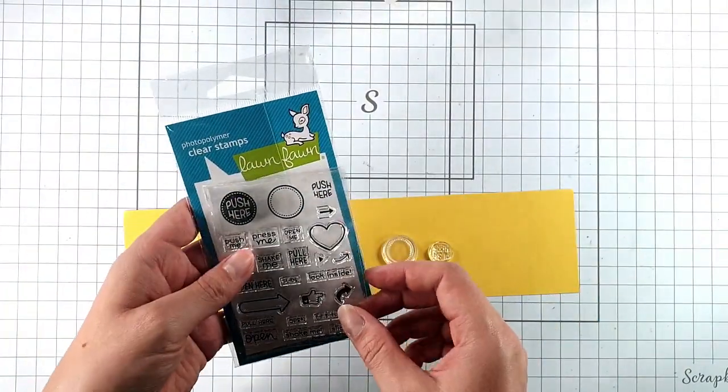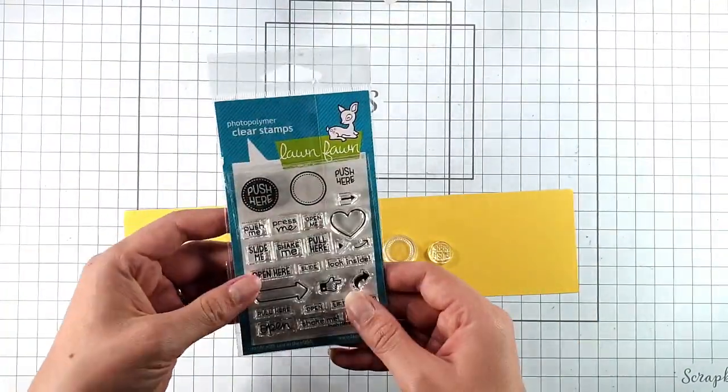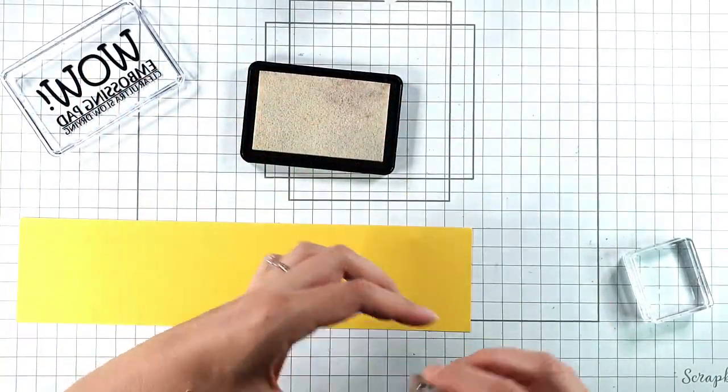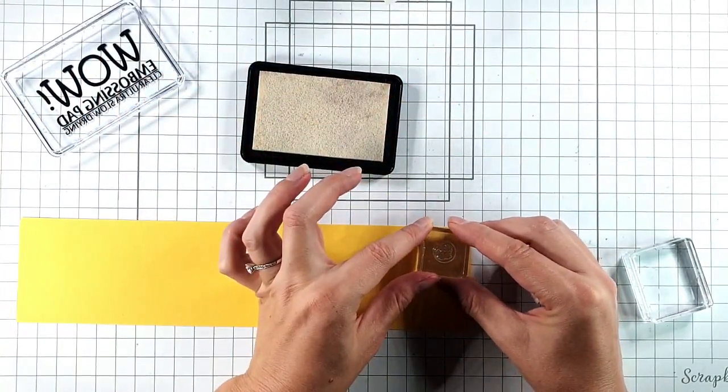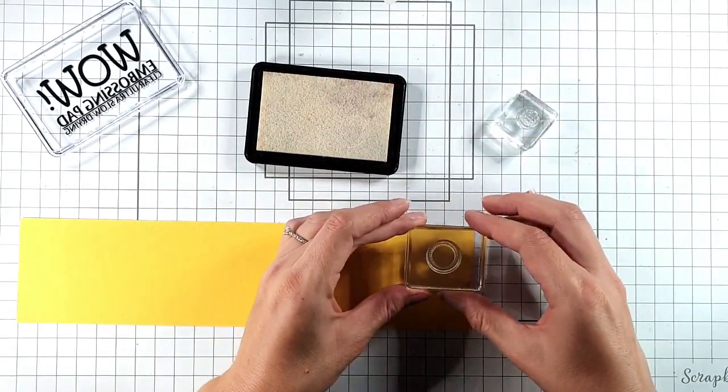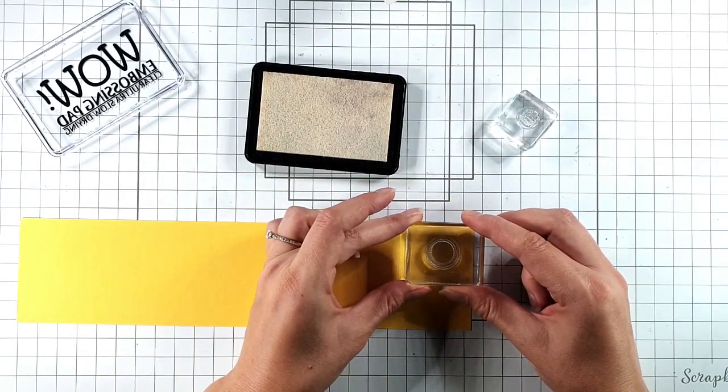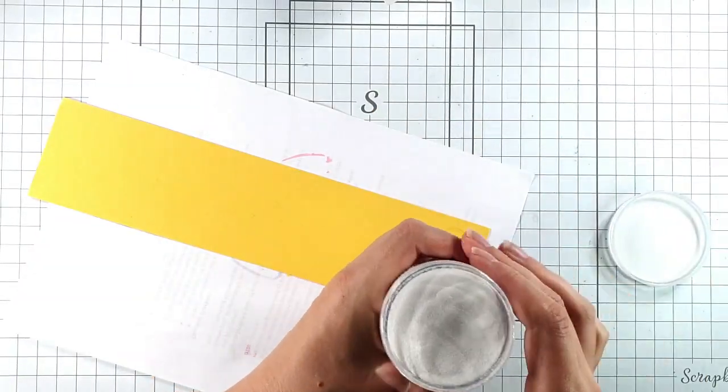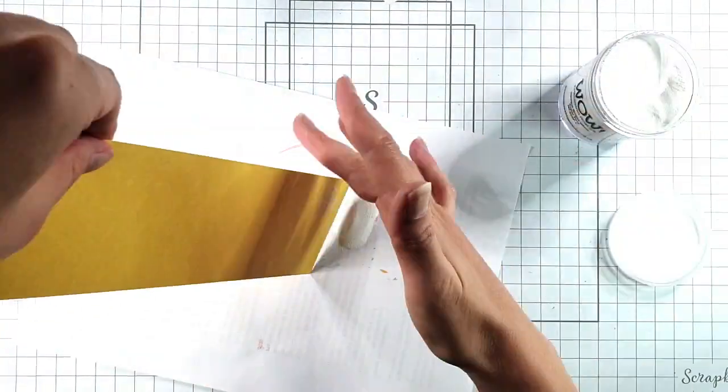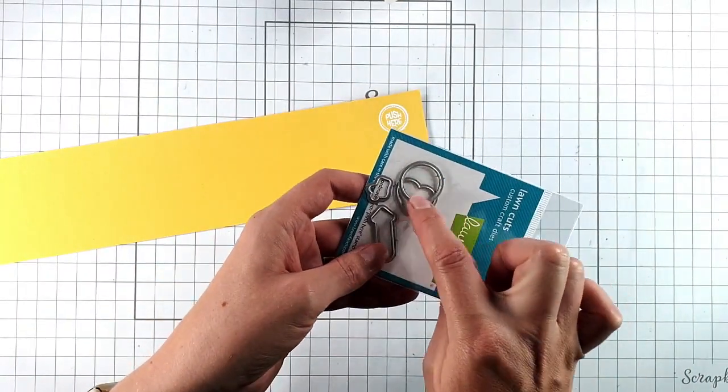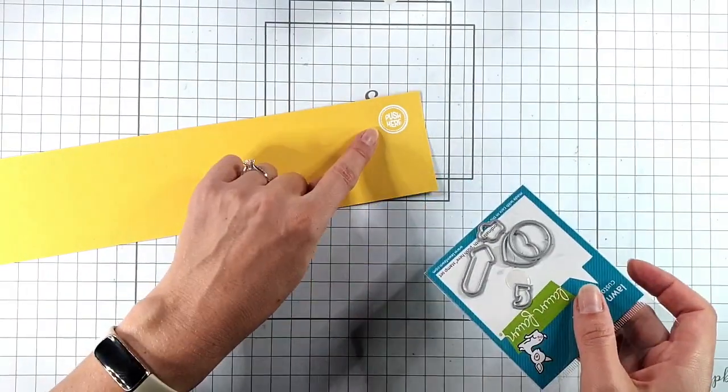So then I'm going to use this little Lawn Fawn push here stamp set and I'm going to heat emboss the push here on some yellow cardstock. I've got the little push here words and then I'm going to pop the circle around it. I'm just going to heat emboss that with white embossing powder. There's a coordinating die set for that so I'm going to use this circle to cut that out.